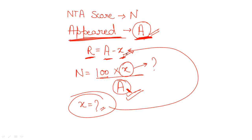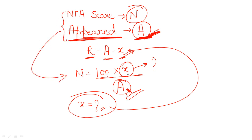To summarize: check your NTA score, find the number of appeared candidates — all candidates for overall rank, or category-specific candidates for category rank. Use the formula to get x, then apply Rank = appeared students − x. That final step gives you your rank R.